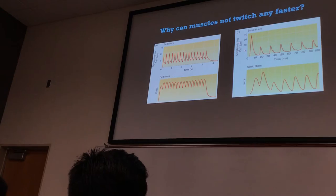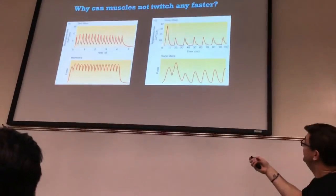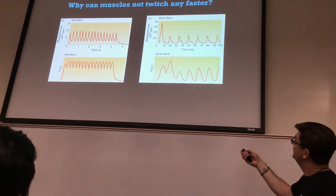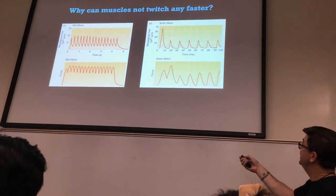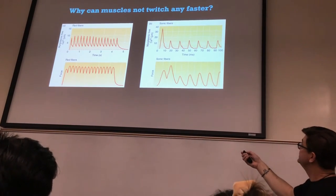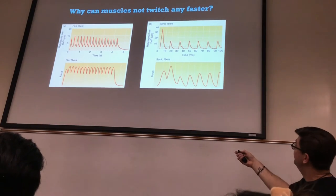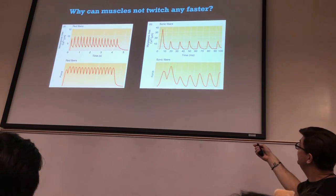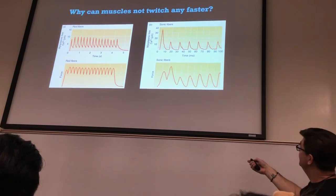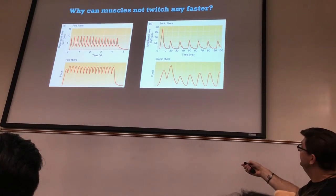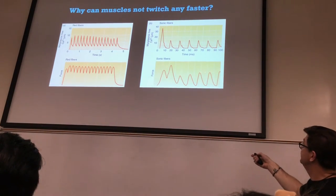When we look at the sonic muscle fibers, initially you have a very large spike in free calcium levels, and then it drops back down. Then, each time there's an action potential, you end up with smaller amounts of free calcium levels. And you can see that the muscle contraction initially is high, it drops, and then slowly increases again.